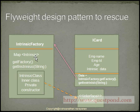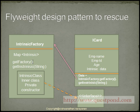To ensure that only one object pertaining to a particular division is created, we make use of a map. This map stores the division name and the corresponding object of type intrinsic class. When an employee has to be associated with a particular division, a check is first performed on the map to find whether the entry for that division exists. If it exists, the same object is returned; else a new object is created, added to the map, and returned.